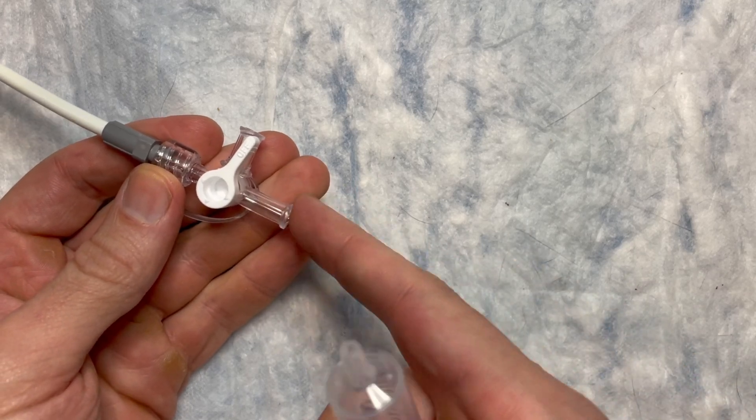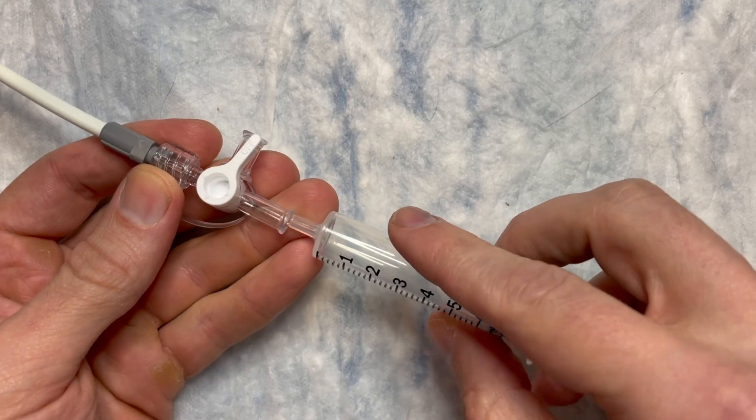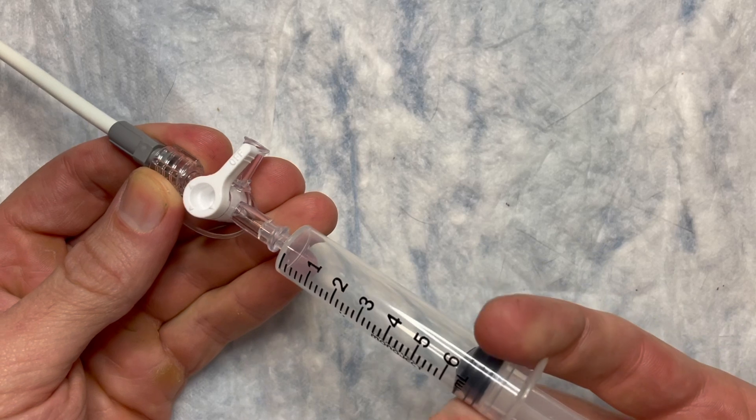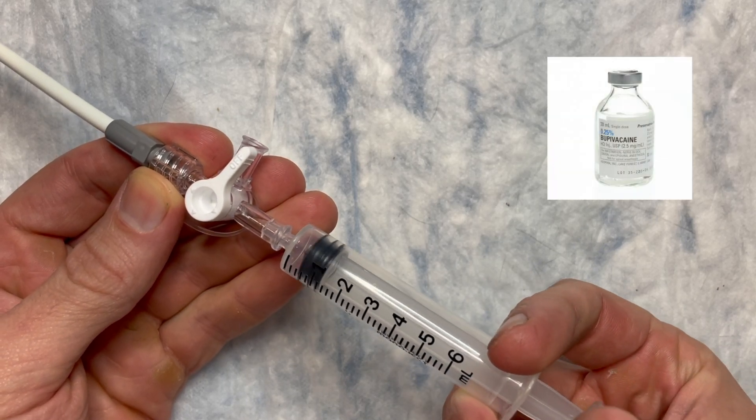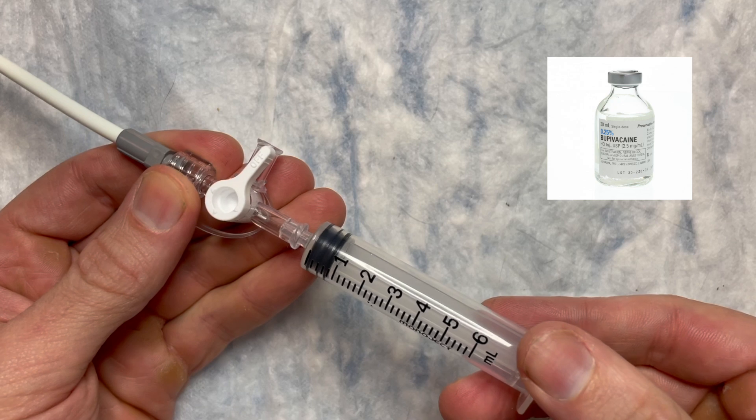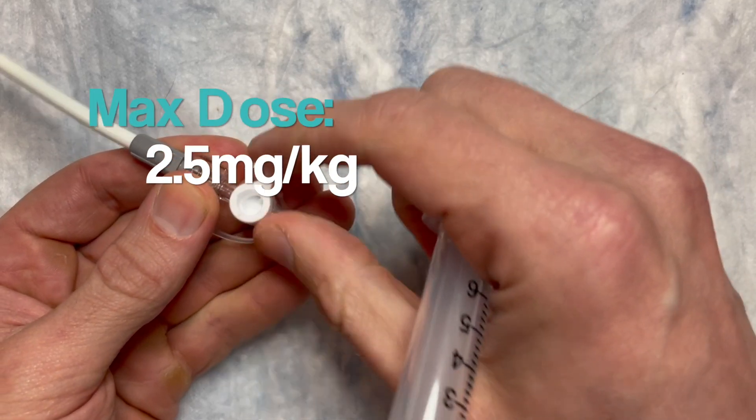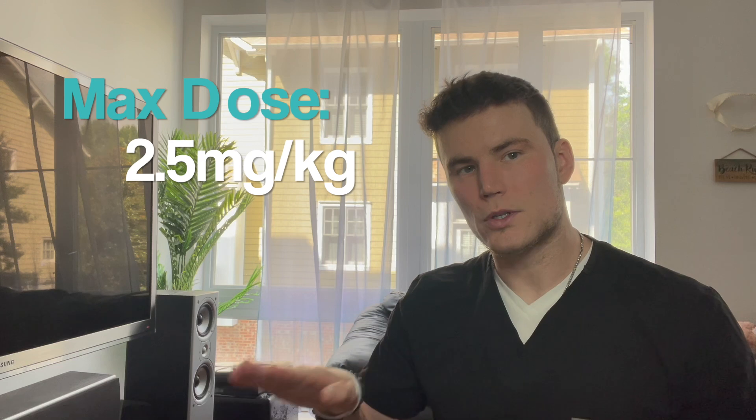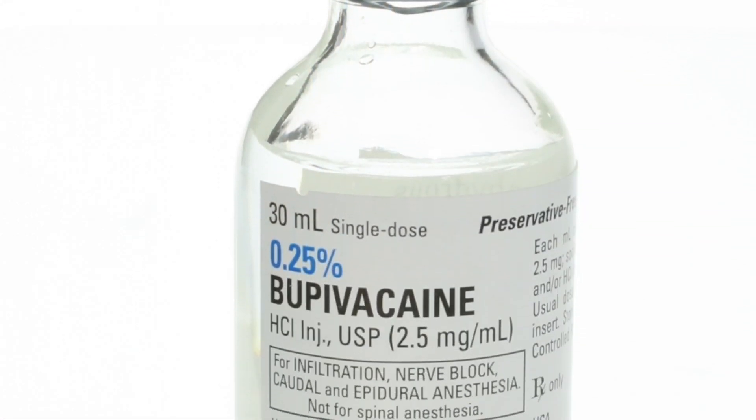First I wanted to touch on after you secure your pigtail catheter and you've got your attachment here, you can actually insert approximately 20 cc's of bupivacaine 0.25% into the pleural space through the pigtail to block some of those nerves and to decrease pain. We've all had pigtails that you insert and it just becomes very uncomfortable for the patient.